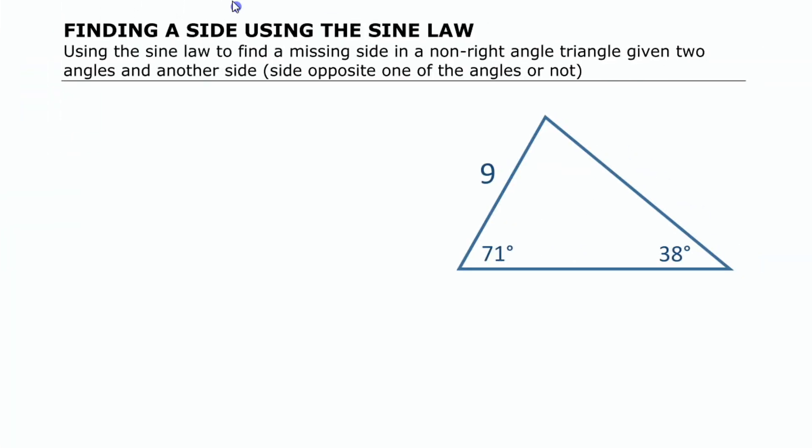All right, so if we're going to use the sine law to find a missing side in this triangle, we have to think about which one we can find. To use the sine law, you need to have a side and an angle that are paired up, that are across from each other, which we have there. And we can use that pair to find the side that's across from this given angle by setting up a proportion using our sine law formula.